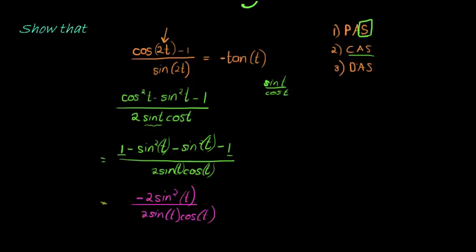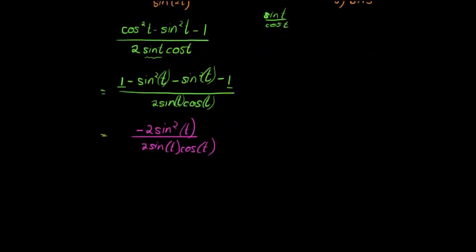And this is where the simplification works out beautifully. So we have one of the factors in the numerator of sine canceled with the factor we have in the denominator. The 2 cancels with the 2, and I am in the end left with negative sine t over cos t, which is negative tan t.